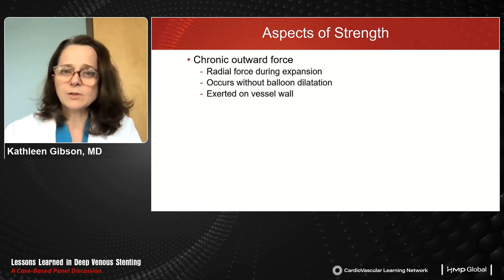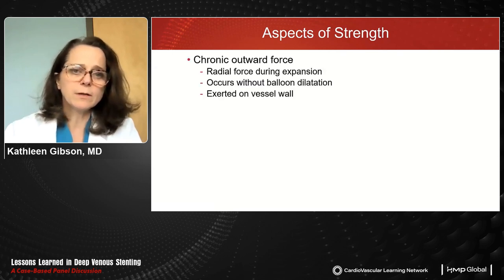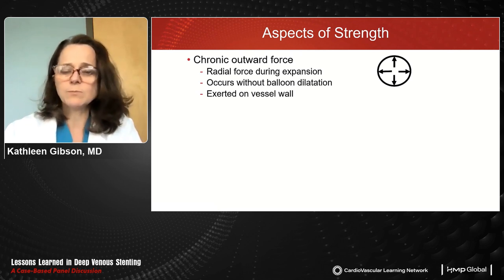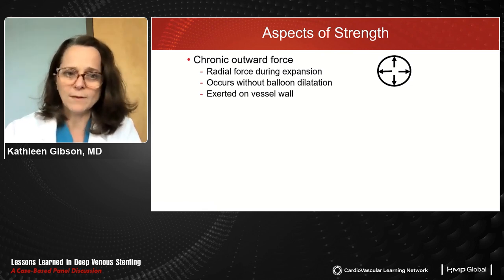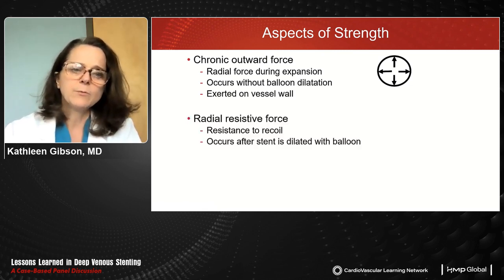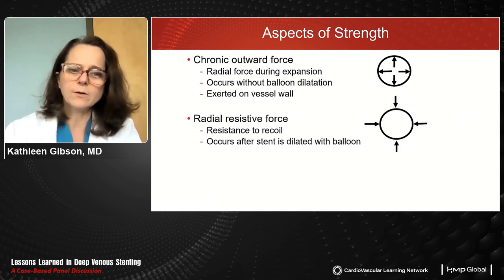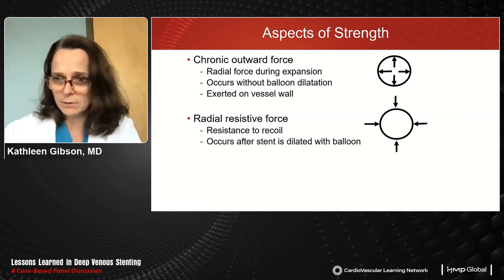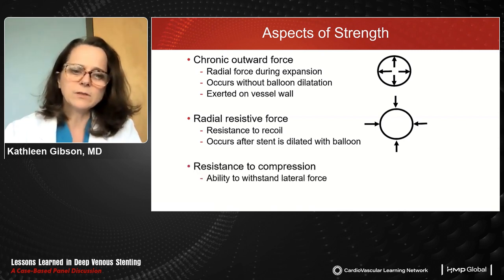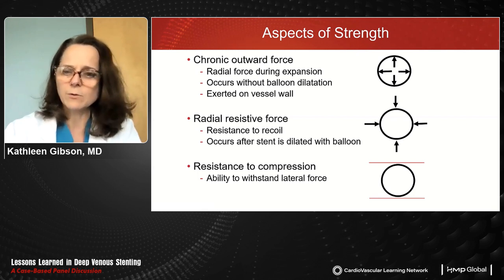Some aspects of strength include chronic outward force, which is the radial force during expansion of the stent that occurs even without post-balloon dilatation — this is the pressure exerted on the vessel wall by the stent. Radio-resistive force represents resistance to recoil, occurring primarily after the stent has been post-dilated with a balloon. Resistance to compression is the stent's ability to withstand a lateral force.